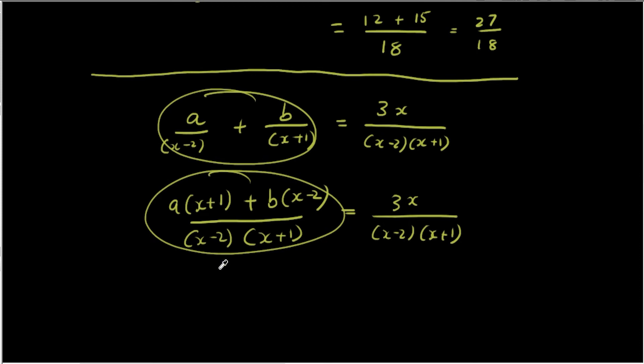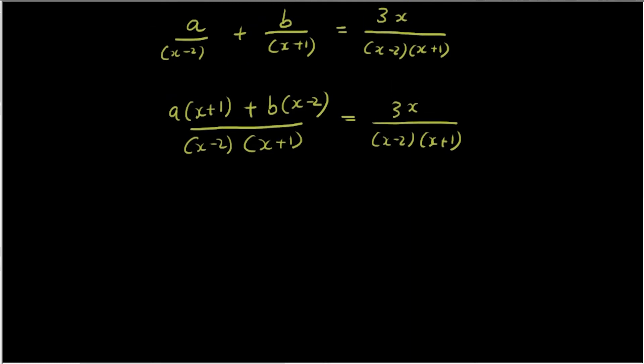So that is now being turned into this using some very basic fraction manipulation. You can see on both sides the bottom of the fractions are equal, so we can get rid of that. Because if you're dividing by the same thing, there's no point in doing it. I can now put 3x = a(x + 1) + b(x - 2).